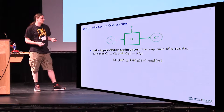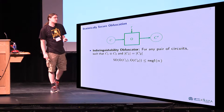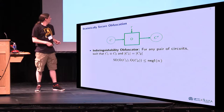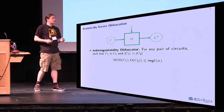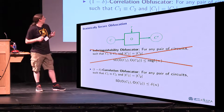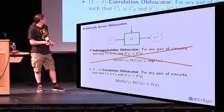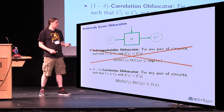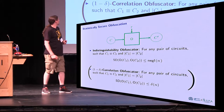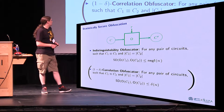The second thing we want from our obfuscator is, of course, that it's secure. What you would usually go with is indistinguishability obfuscation. In the statistical sense, indistinguishability obfuscation simply means that if you have two circuits that are functionally equivalent and have the same size, then the statistical distance of their obfuscations must be negligible. However, we can also weaken this definition to something we call correlation obfuscation, where it's enough that we know some function delta that bounds the statistical distance. For the main part of this talk, I will focus on indistinguishability obfuscators to keep things simpler, but I will mention how our result also applies to correlation obfuscators.